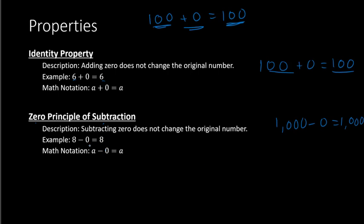In math notation, we can replace the number 8 with the letter A, where A can represent any number. So we have A minus zero equals A. A could be 1, could be 2, could be negative 4 — doesn't matter. Any number minus zero will be the number you started with. So those are the four properties: commutative, associative, identity, and the zero principle of subtraction.